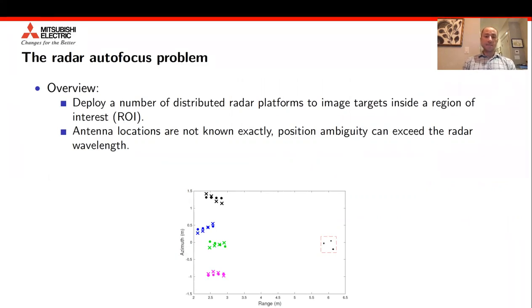The radar autofocus problem is essentially where we deploy a distributed set of radar platforms. In this figure, we see an example of four radar platforms where the platforms are attempting to image a set of targets within a region of interest. The problem arises with the fact that the exact antenna locations are not known, and as a result, the image gets blurred. Our goal is to generate a high-resolution focused image of the targets that exist inside that region of interest.